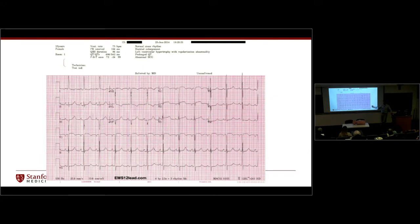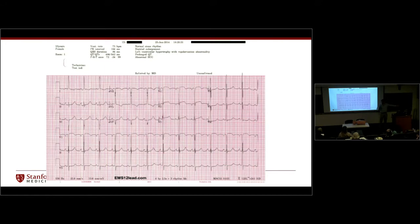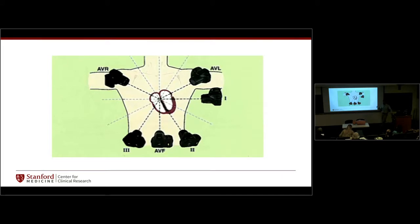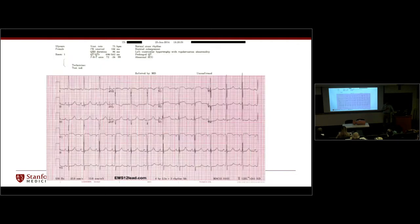If all your vectors are going in the wrong direction, you start thinking about something different in the person's chest rather than a hookup mistake. That's why it's important to always look at all your leads and ask: does this make sense? If lead I is positive, lead II might be isoelectric — meaning a lot of signal going perpendicular — and lead III is negative, AVR is negative, AVL is positive, AVF is negative: all of those together consistently tell you the direction electricity is moving. This consistency helps you understand your EKGs, catch mistakes, or identify serious pathology.